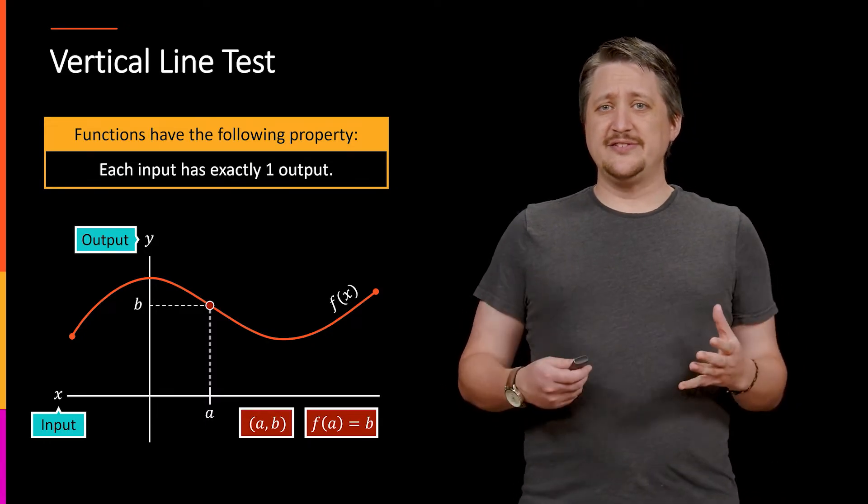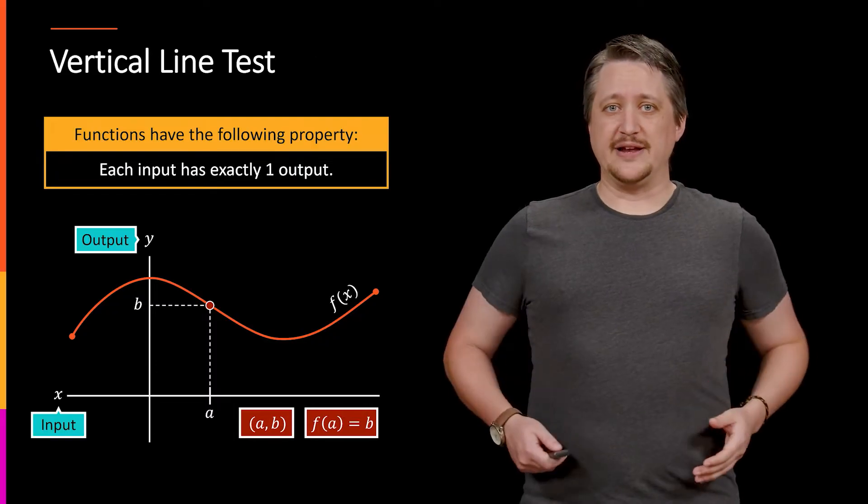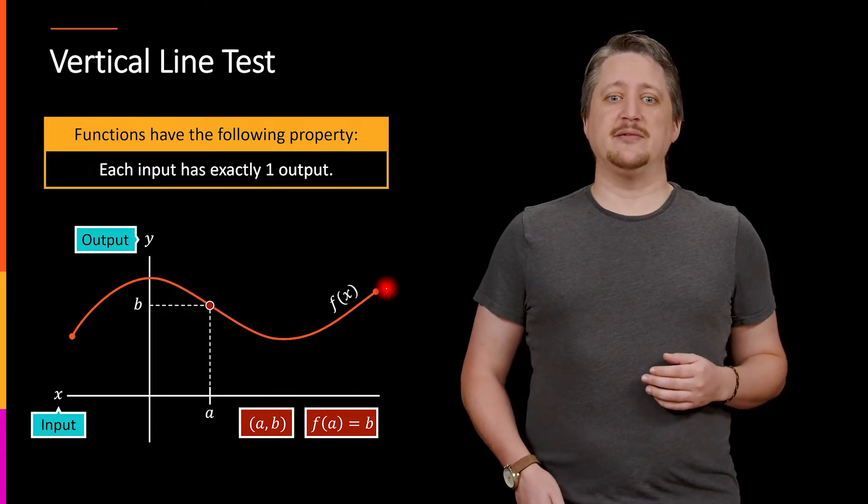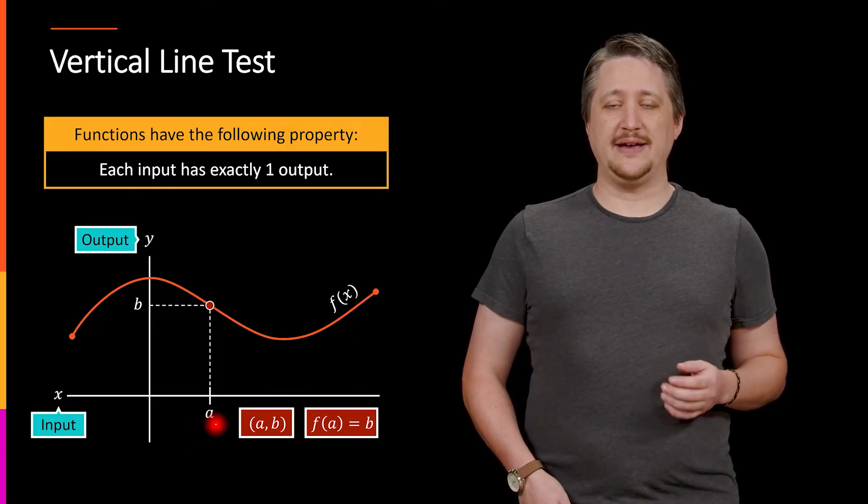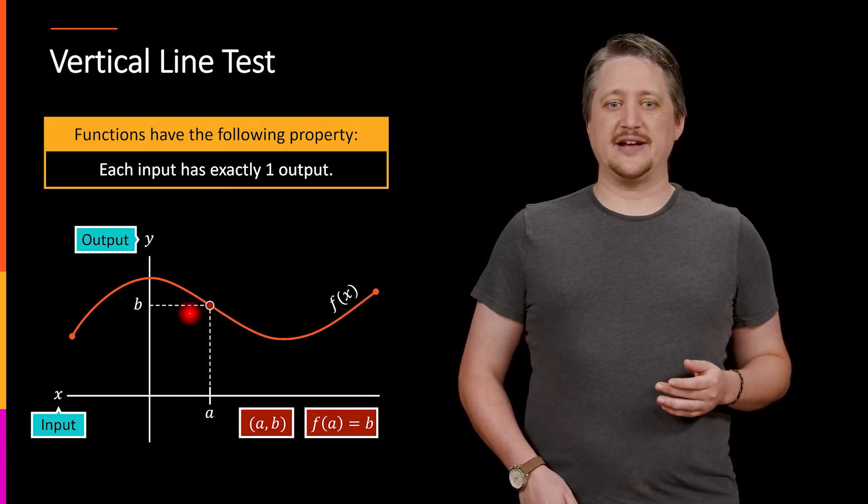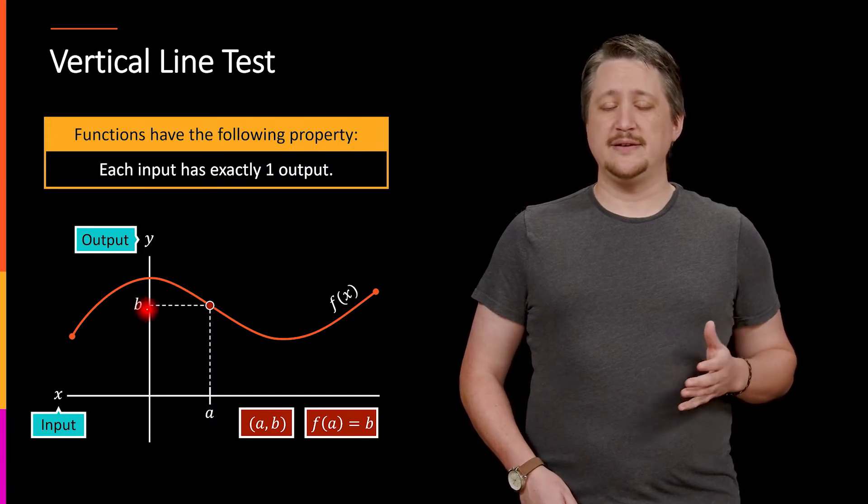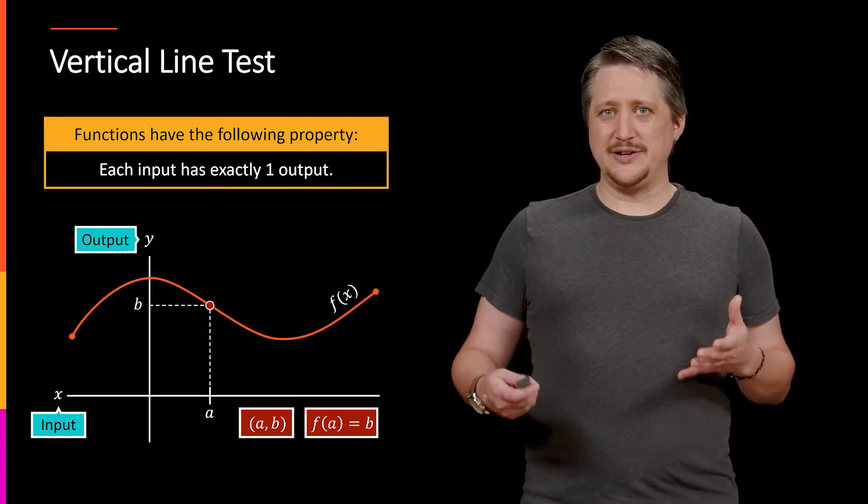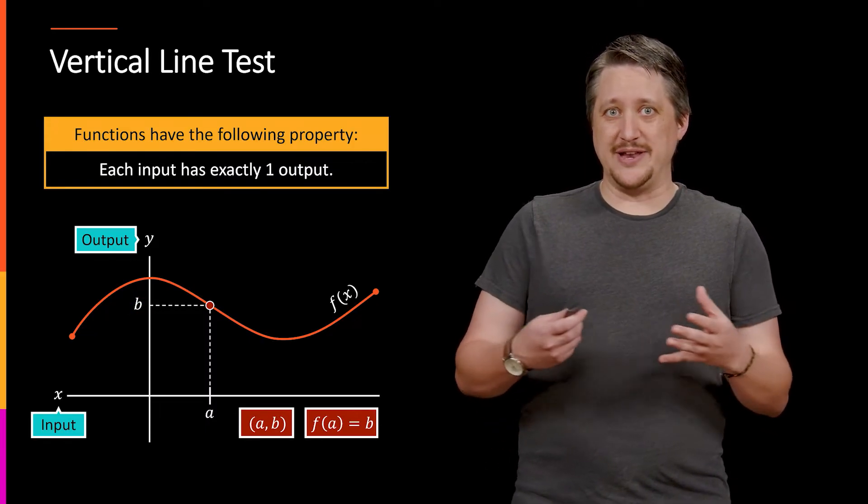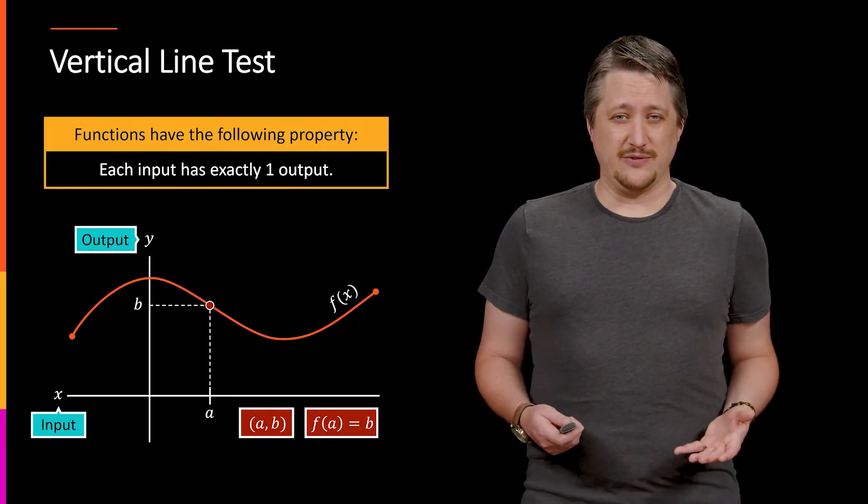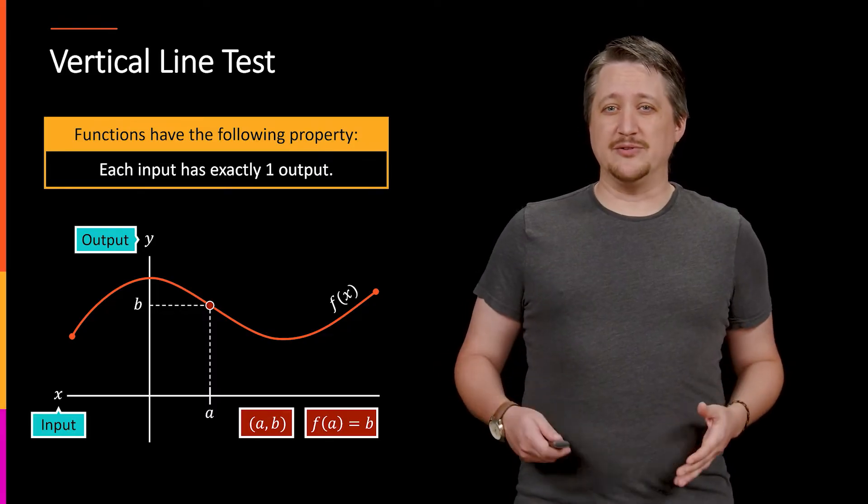This is an example of a function. Specifically, the idea here is that my one x value, a, has exactly this one y value, b. Now it might not be clear how this would not be the case because we usually only draw functions. So by way of example, let's look at an explicit version of something that isn't a function.